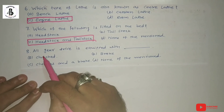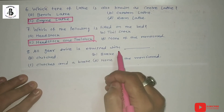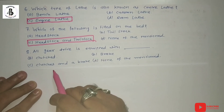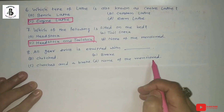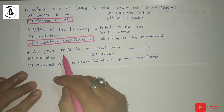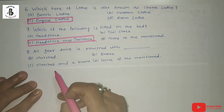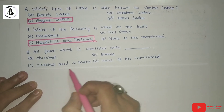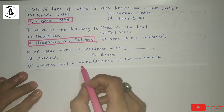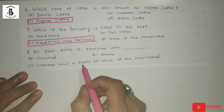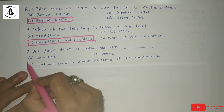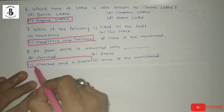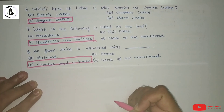The next question: all gear drive is equipped with — Option A: clutch. Option B: brake. Option C: clutches and brake. Option D: none of the above. All gear drives are equipped with both clutches and brakes: the clutch is used for easily engaging and disengaging the gears, and the brake is used for controlling the speed. So the answer is option C: clutches and brakes are equipped in all gear drives.